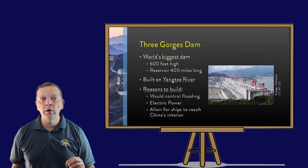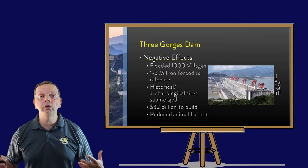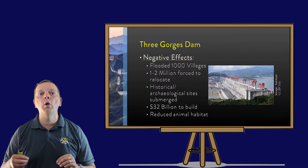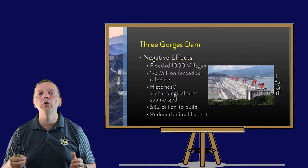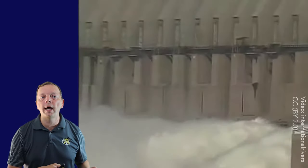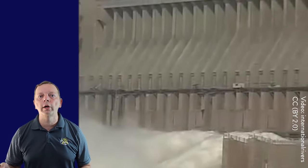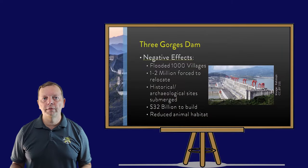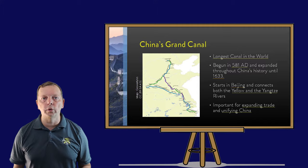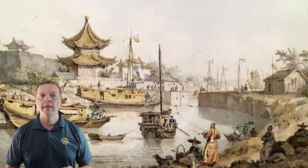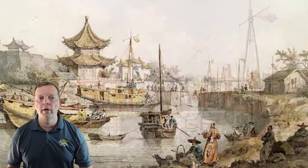The Three Gorges Dam came with a price beyond the $32 billion it cost to build. Some 1,000 villages were flooded, causing between 1 and 2 million people to relocate. The flooding that created the 400-mile reservoir not only meant the loss of animal habitat, but several historical and archaeological sites now lie at the bottom of the reservoir.